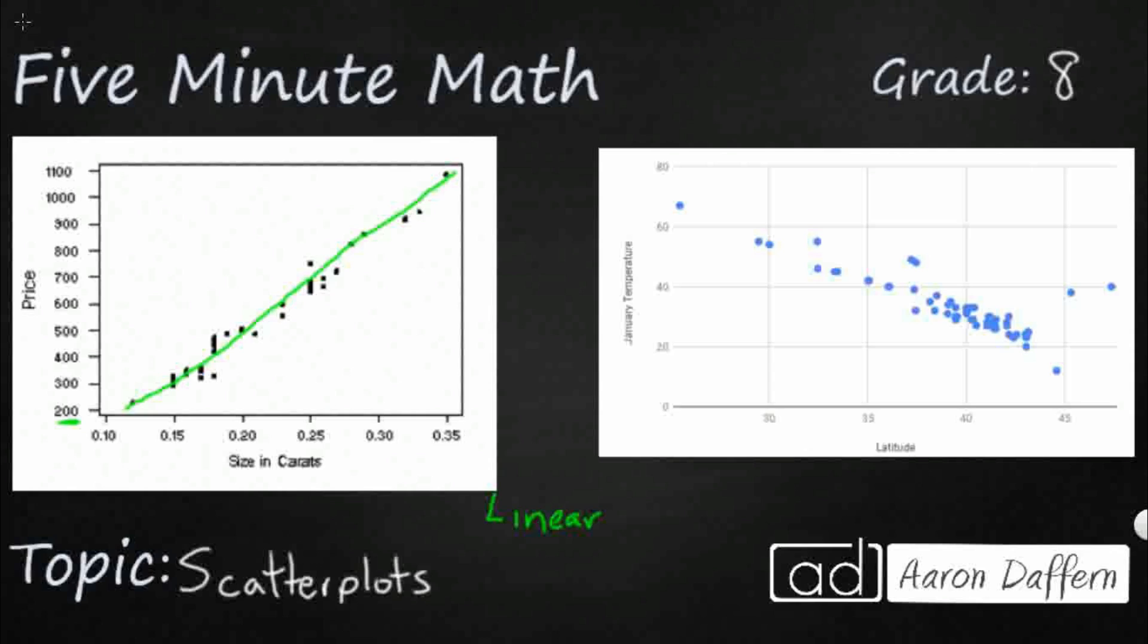So this is a scatter plot that relates the size and carats, so we're dealing with diamonds right here. So that's the quality of the diamond and its price, and that makes sense that the higher the carats, the more it's going to cost, because that's going to be a higher quality diamond. So we can say this is a linear equation, but we can also say it has a positive correlation. That means as the x goes up, the y goes up. So that is a positive correlation because it trends to the top right.